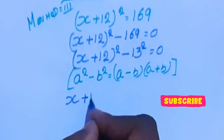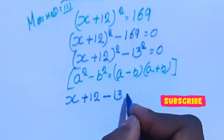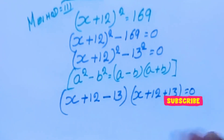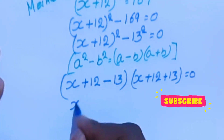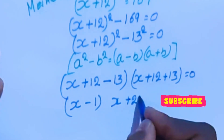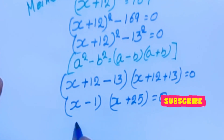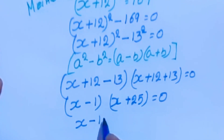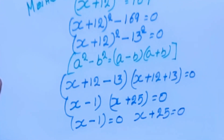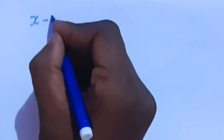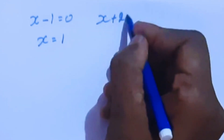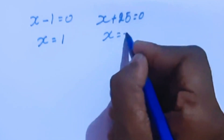Applying the formula: (x plus 12 plus 13)(x plus 12 minus 13) equal to 0, which gives (x plus 25)(x minus 1) equal to 0. We have two equations: x minus 1 equal to 0, and x plus 25 equal to 0. From x plus 25 equal to 0, x equal to minus 25.